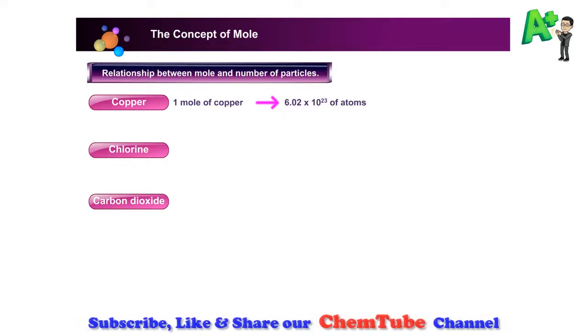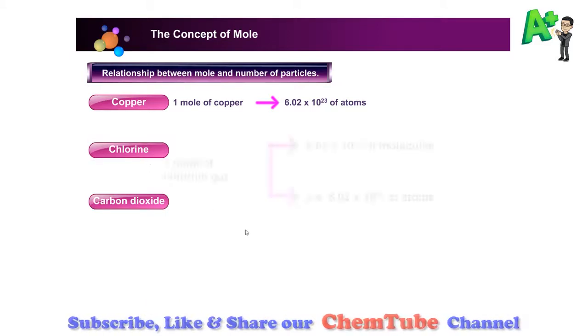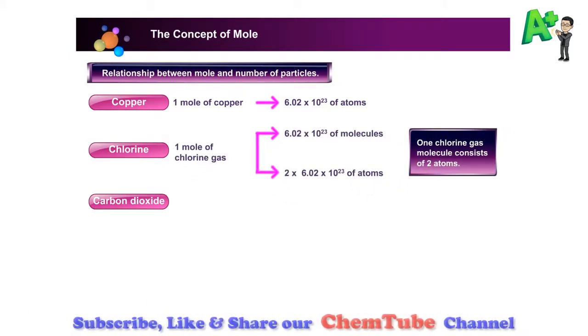To see the number of molecules and atoms for chlorine gas, click on chlorine. Hence, the number of chlorine atoms is twice that of the number of chlorine molecules.